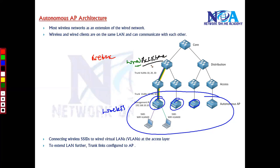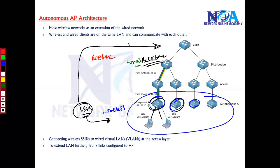You want the users who are connecting wirelessly to get some kind of mobility — meaning they can connect to the network through the wireless infrastructure. You need to make sure that these wireless users are also able to access the resources present on the wired network.